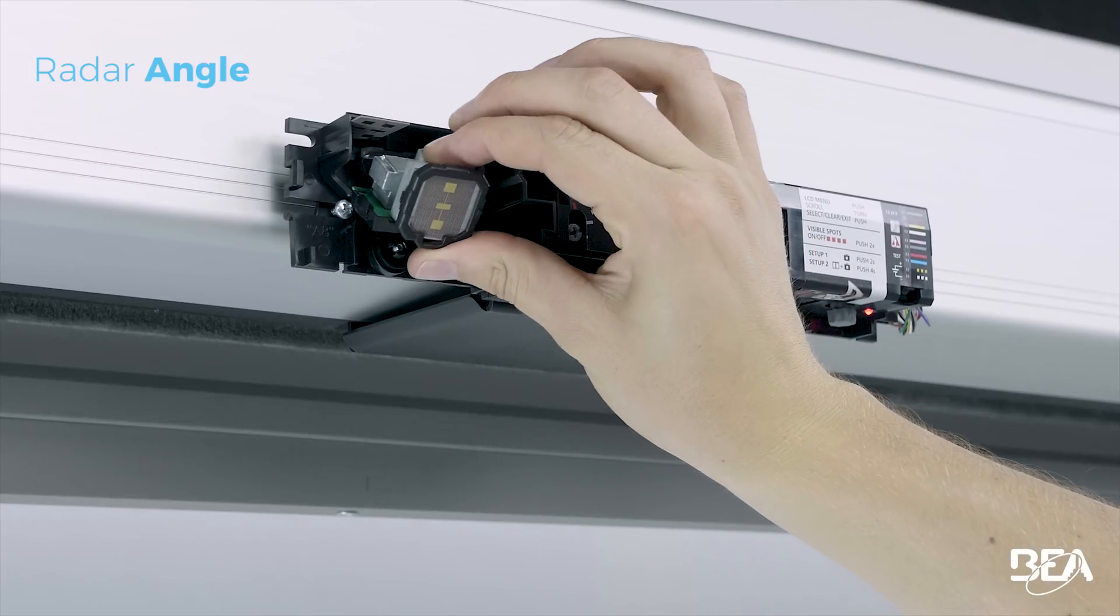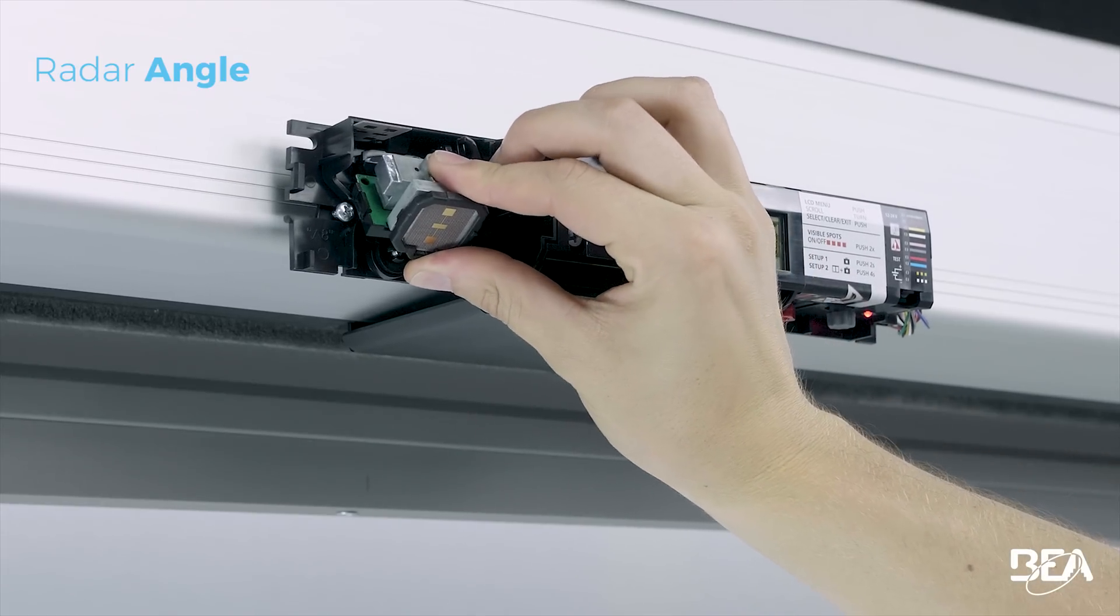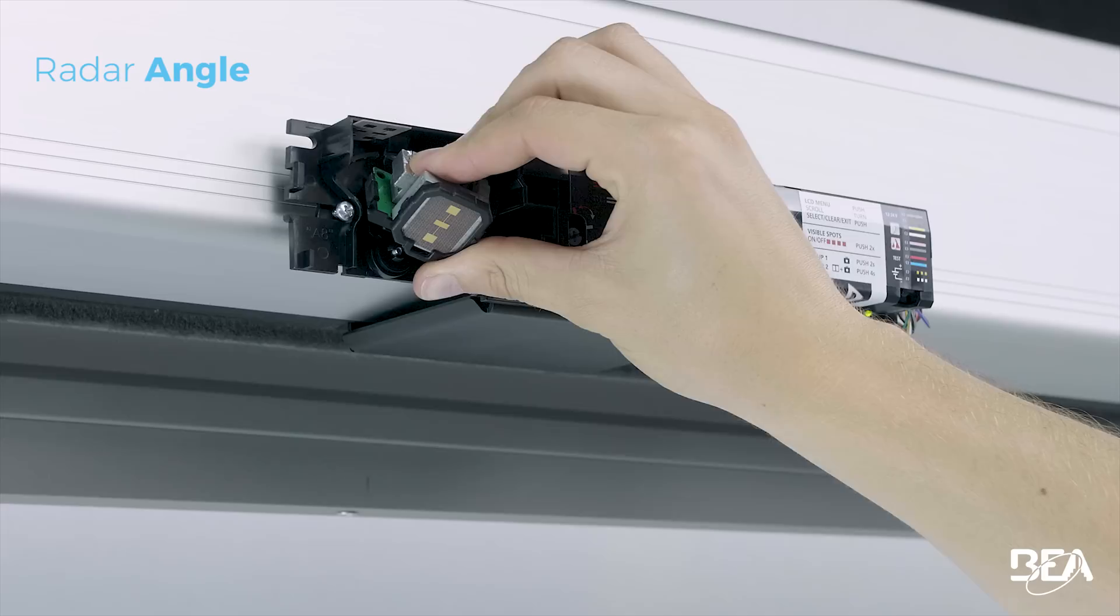The angle of the opening field can be adjusted by tilting the radar antenna up and down or by turning it sideways.